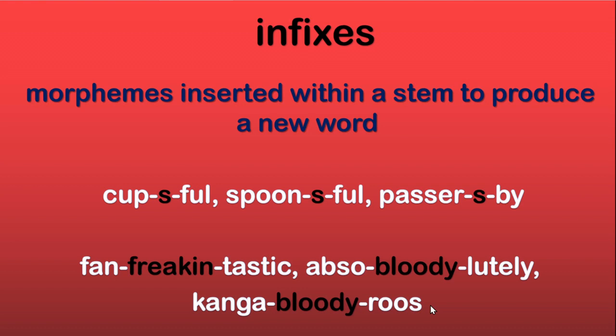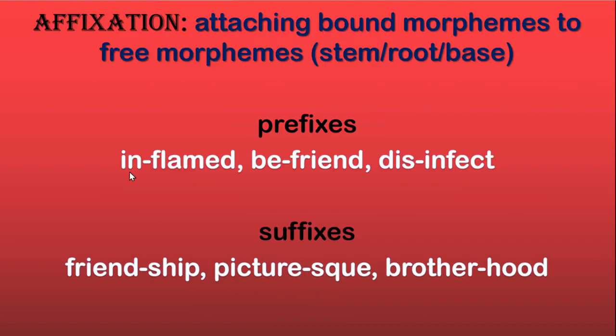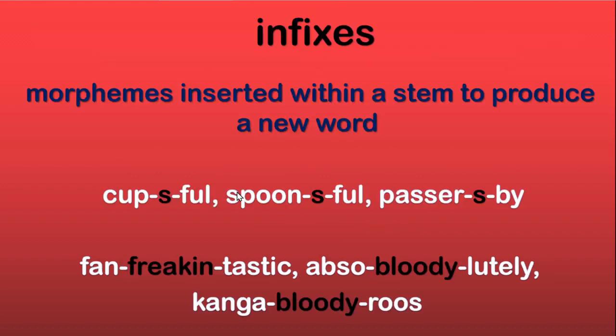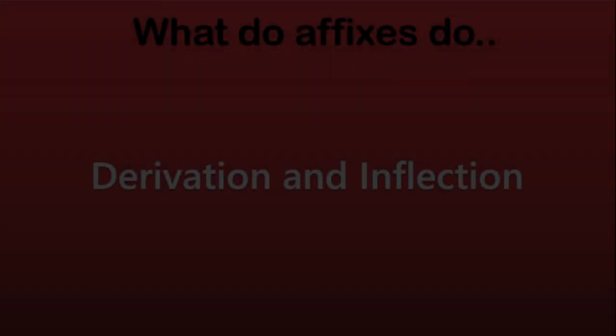So that is — we have looked at affixation: prefixing and suffixing, which are very common and very crucial to English in its morphological functioning. You can also technically have infixes. Then we might want to know what affixes do. Affixes in language — like prefixes and suffixes — are used for mainly two purposes: one is for derivation, and the other is for inflection. What is derivation and what is inflection?